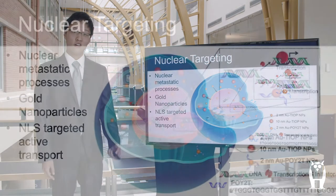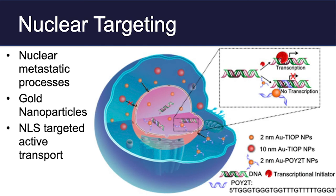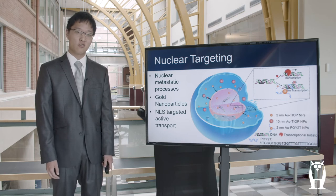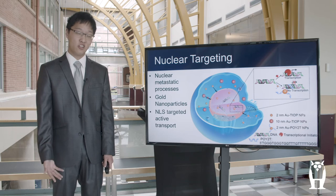One of the important targets we have to reach subcellularly is the nucleus, home to DNA — and changes to structure and mutations in DNA can cause cancer. In this study, you can see different sizes of gold nanoparticles with different formulations. The smaller nanoparticles are able to successfully go into the nucleus and stop RNA transcription. They can also be labeled with specific nuclear localization signals, which allow for more active transport into the nucleus so that they can reach their intended target.